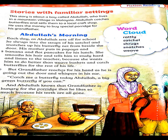But grandfather reaches for his hand as he is going out the door and whispers in his ear — whisper ka matlab hai kaan mein aahistah aahistah baatein karna. Grandfather uske paas pahunchte hain aur uske kaan mein jakar bolte hain: 'Catch me a butterfly — a green butterfly if you can.' And Abdullah knows that grandfather is hungry for the porridge, because his teeth are all gone.